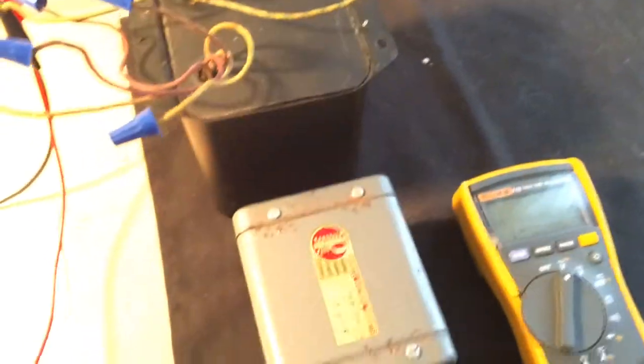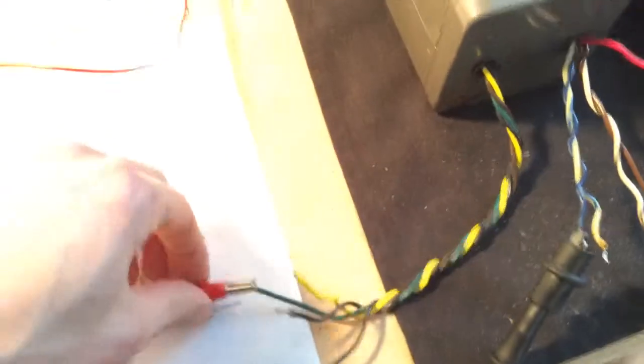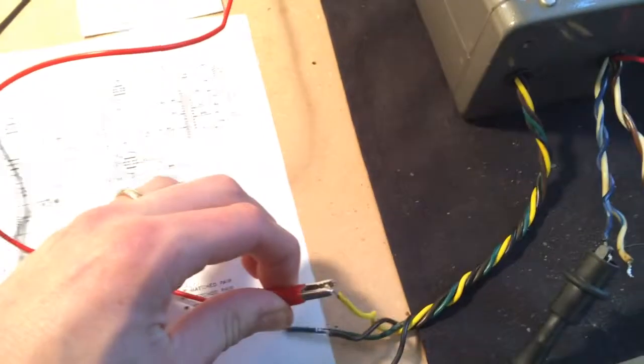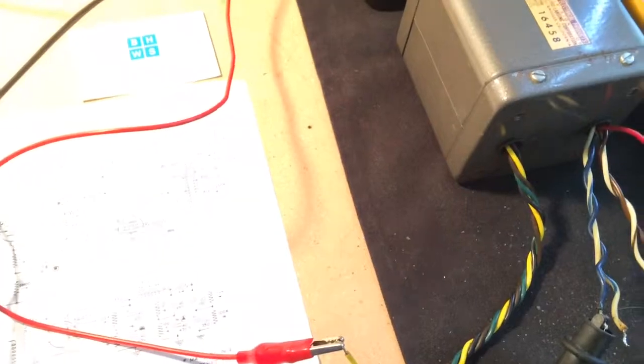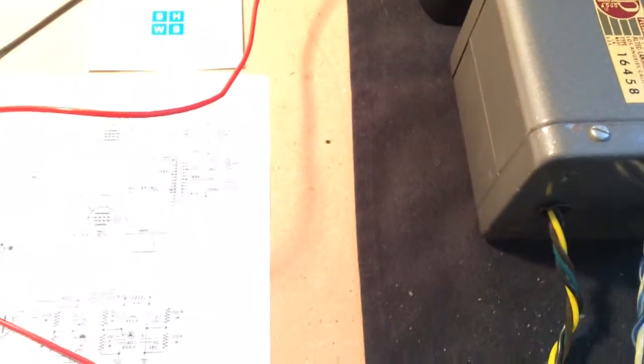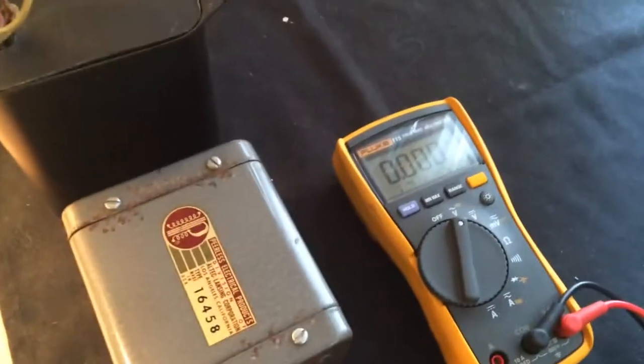All right. I'm going to try the same thing. Keeping the common the same, I'm going to move to yellow. Yellow is the 8 ohm lead. The green that we tested is the 16 ohm lead. So here we are in yellow, 28.31 volts.